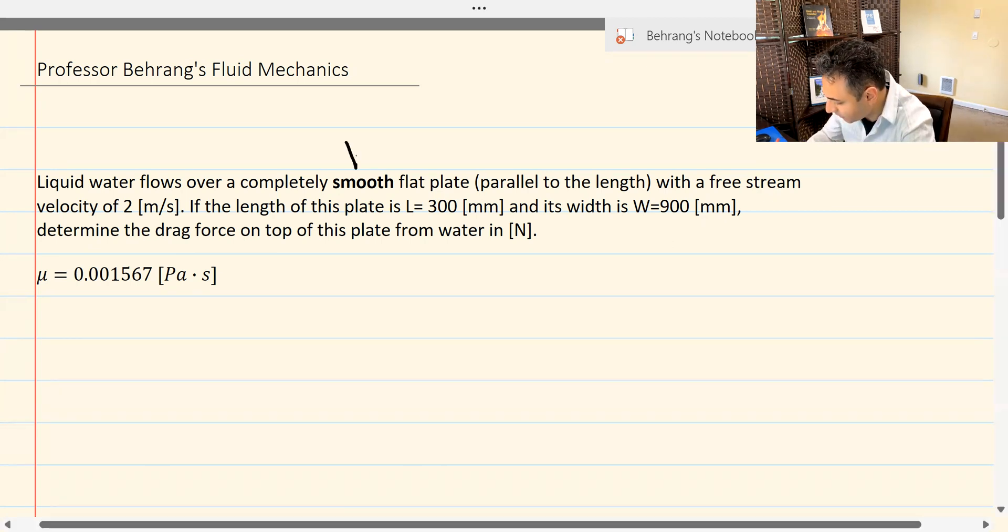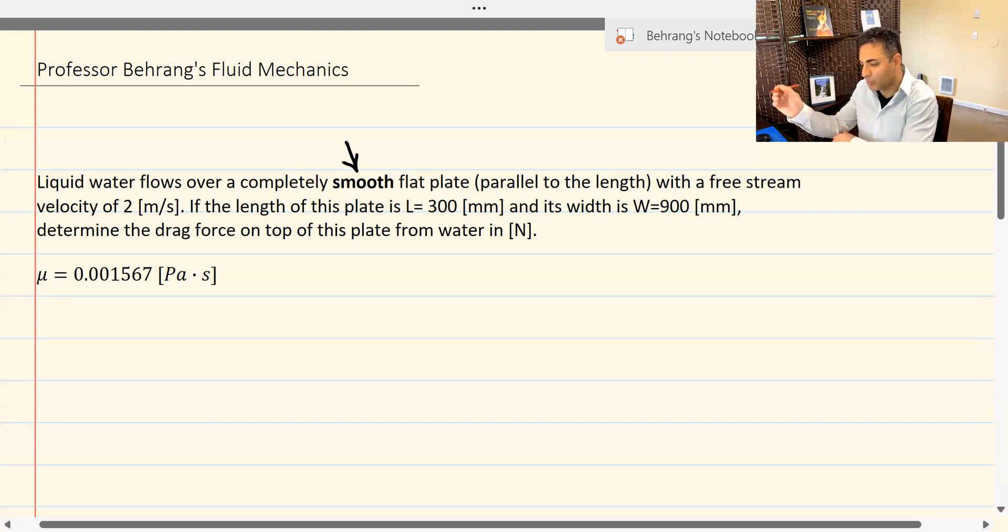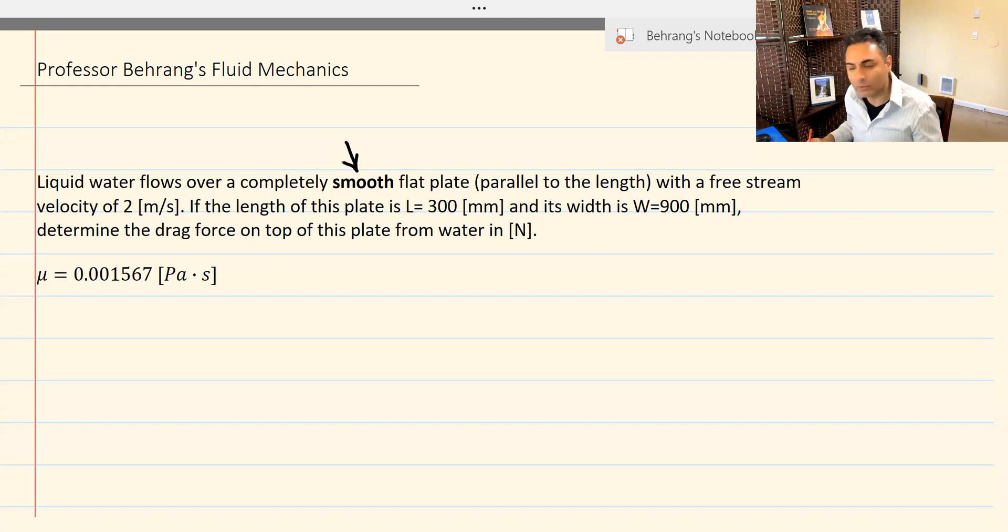And it says it's a smooth flat plate. Because it is smooth and it doesn't say the boundary layer is tripped or anything, we just need to calculate Reynolds number to see in what category this is going to fall. It might be category one or category two, or maybe it's outside of all these ranges, then it becomes category five. And then we have to take a look at that graph, the chart that we have for the external flow over a flat plate. So the first step is to calculate Reynolds number.